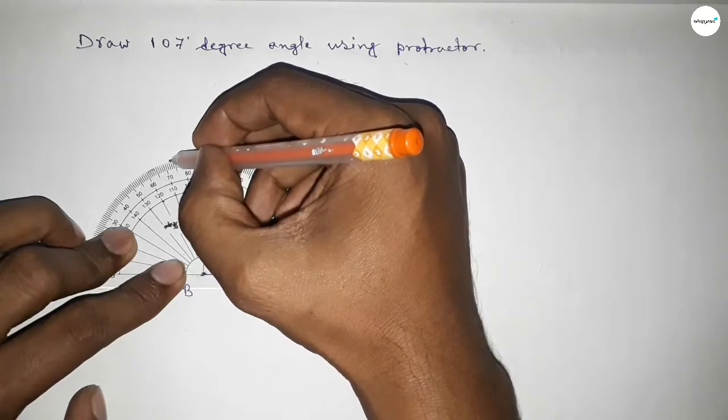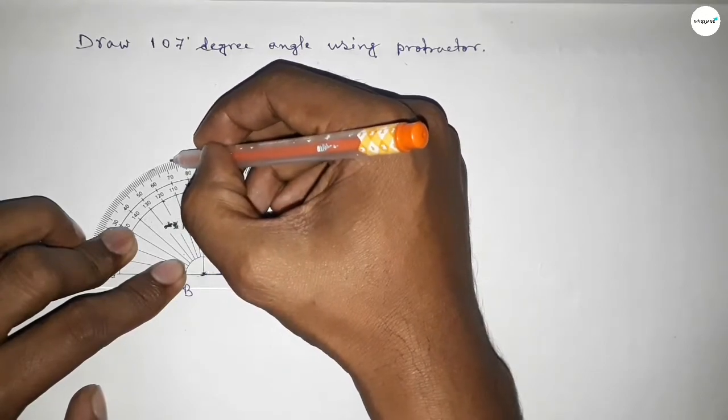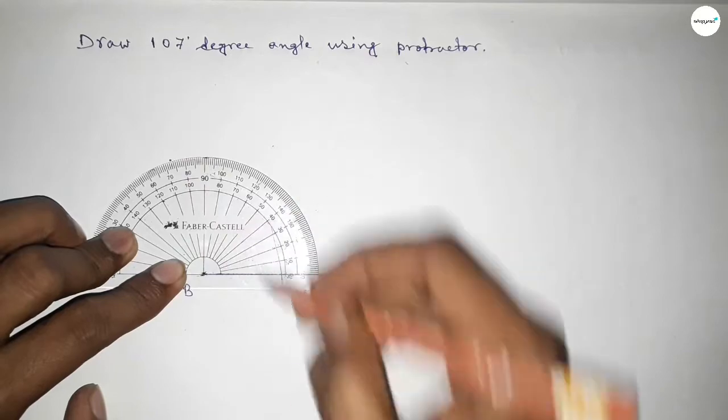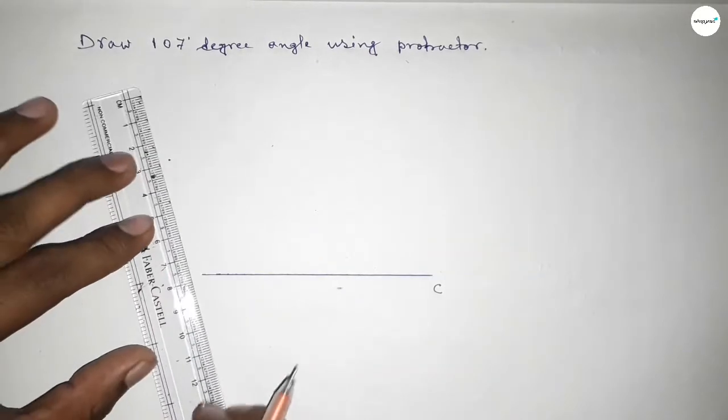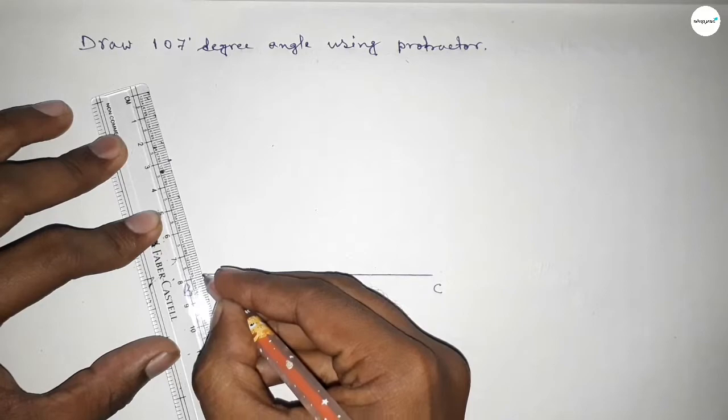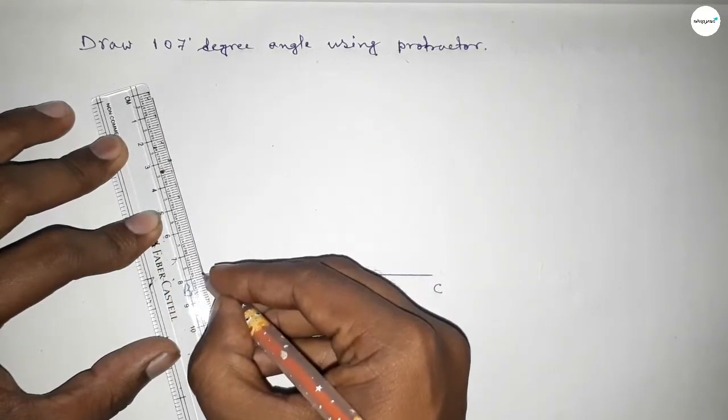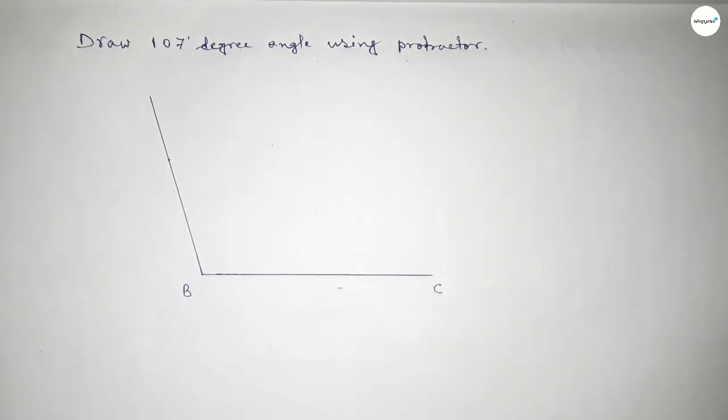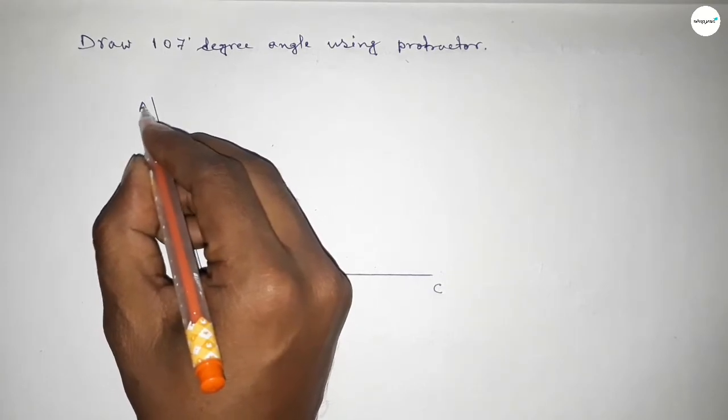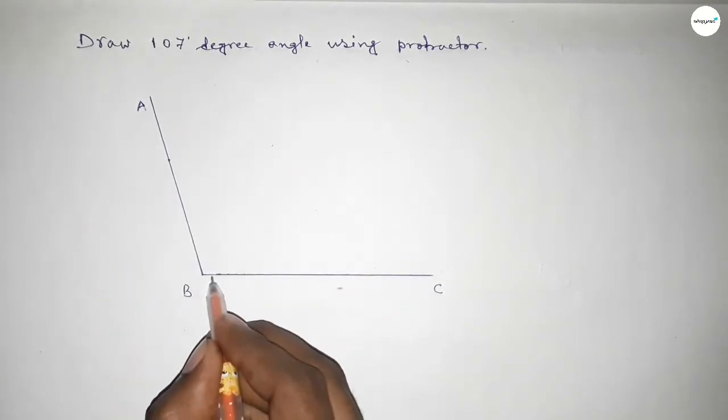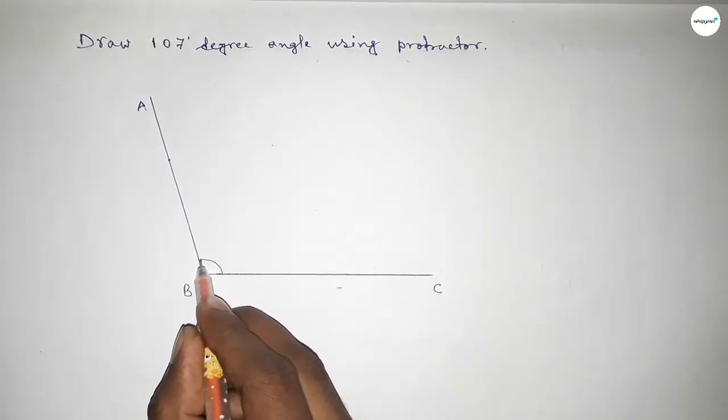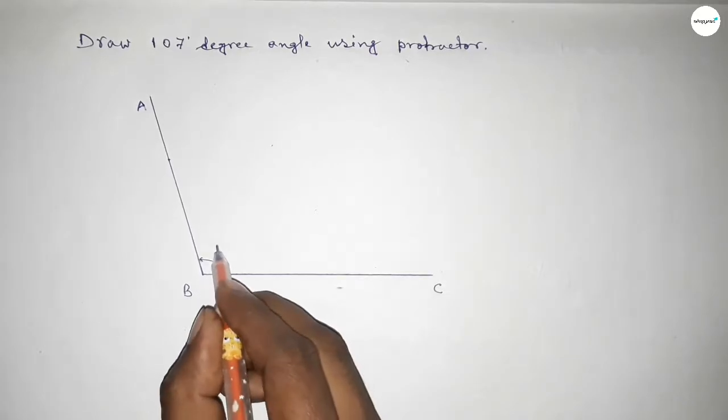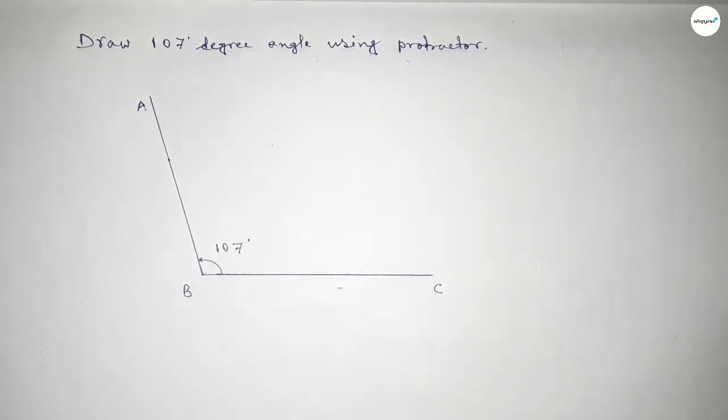Now joining this side to get a 107-degree angle, and taking here point A. So angle ABC, this is a 107-degree angle. Therefore, angle ABC is equal to 107 degrees.